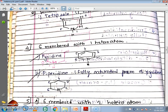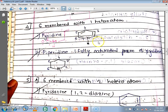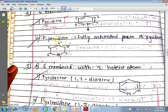Next we will see 6-membered rings with 1 heteroatom. The first compound is pyridine, which has a single heteroatom — nitrogen — in a 6-membered ring, so it is called pyridine. The second compound is piperidine, which is the fully saturated form of pyridine: the double bonds are converted to single bonds by adding hydrogen, so it is called piperidine.